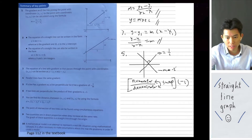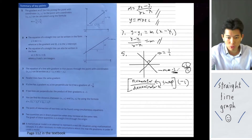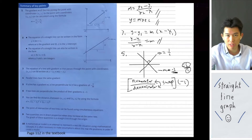So if the original gradient is negative 2, that's the same as negative 2 over 1. If you swap the numerator and denominator, you get minus 1 over 2. Then minus 1 over 2 times negative 1 gives you the gradient for the perpendicular line.